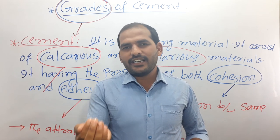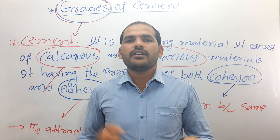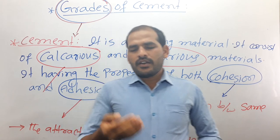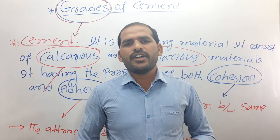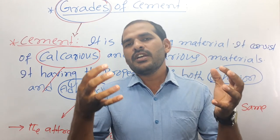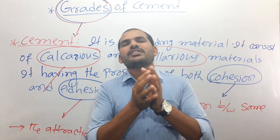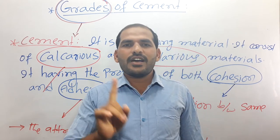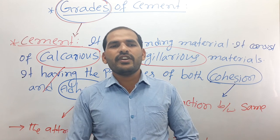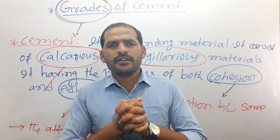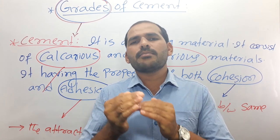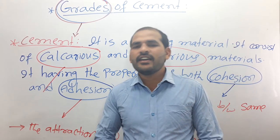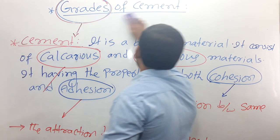Adhesion means the attraction between two different molecules. For example, here I take cement and here I take steel. Cement is a different molecule and steel is a different molecule. The attraction between cement and steel — that is, between two different molecules — is known as adhesion. Because cement has both cohesion and adhesion, it can bind with cement and also with other materials like steel.